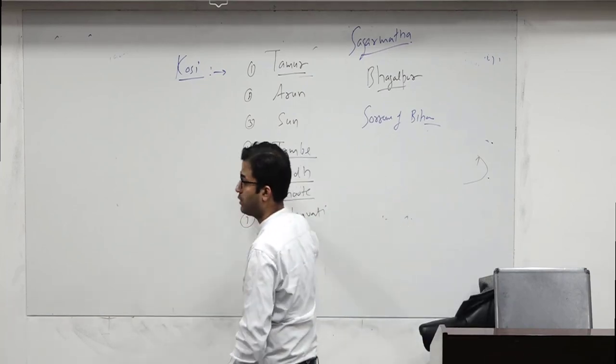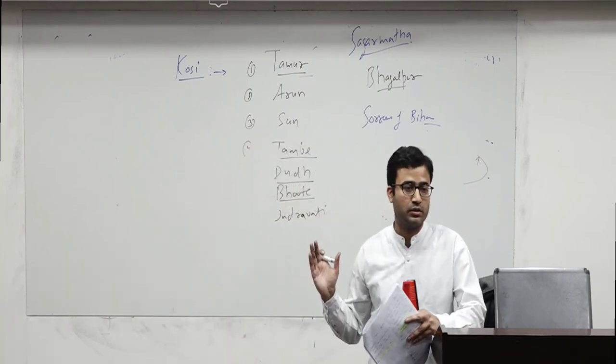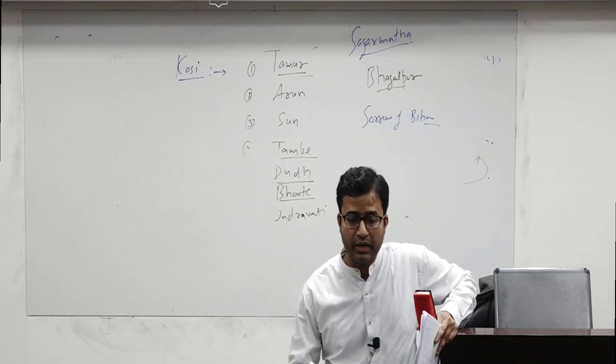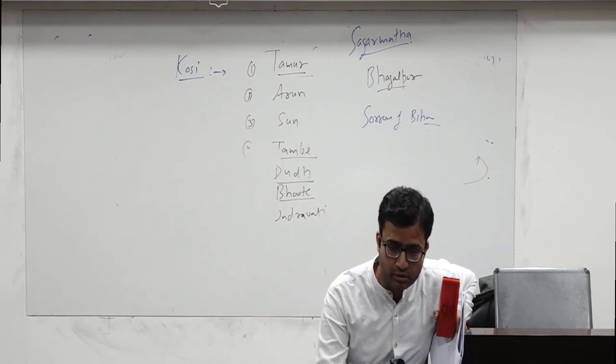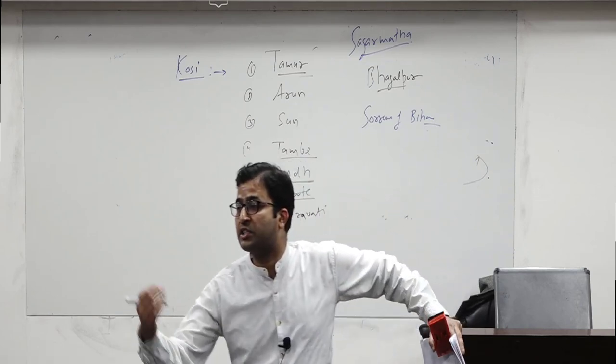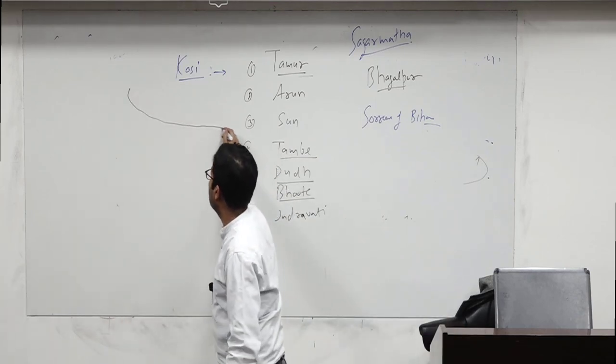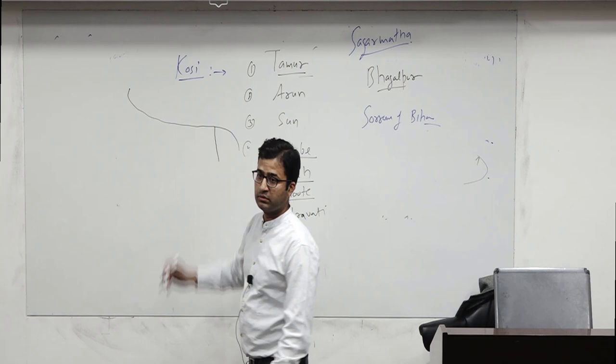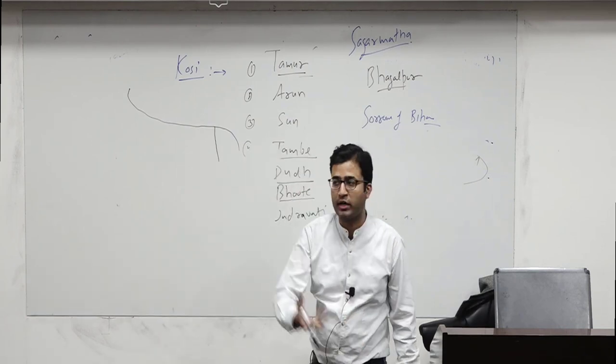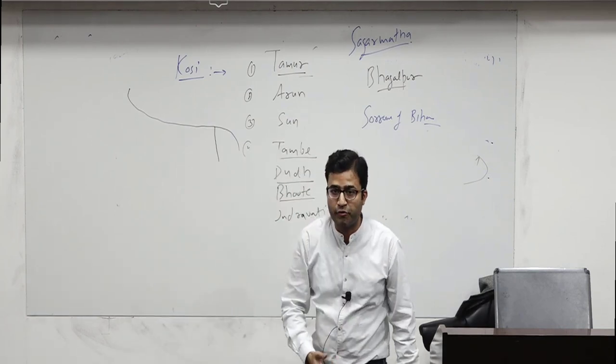Damodhar is very important. Remember that Damodhar? That is the tributary of which river? Hooghli. Hooghli is the distributary of Ganga. If I look at the map, this is Ganga. Here we have Hooghli, which is the lifeline of West Bengal, you can say, because it is a distributary of Ganga.